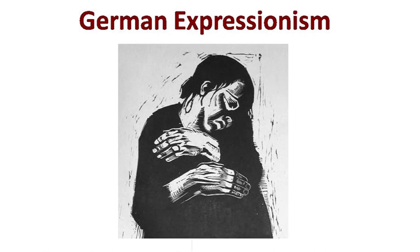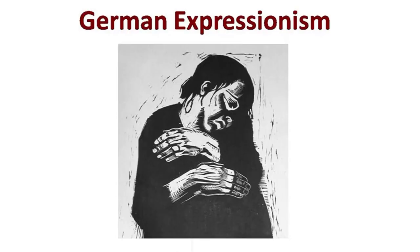The name suggests that the movement started from Germany, basically in cities like Munich, Dresden, and also later in Berlin. But because of the power of the movement, it soon started spreading almost all over Europe. Though due to the origin of its location, the term 'German' is always associated with Expressionism.